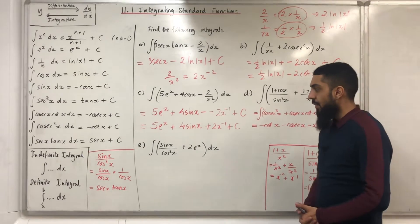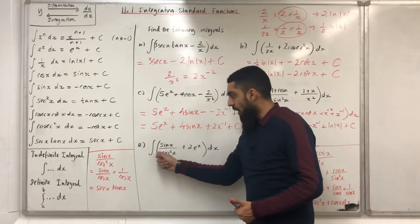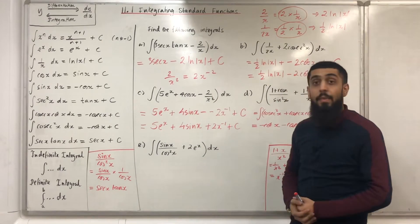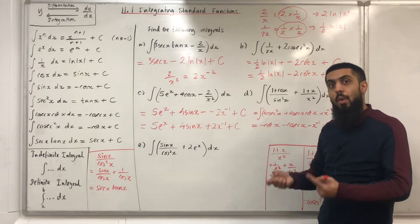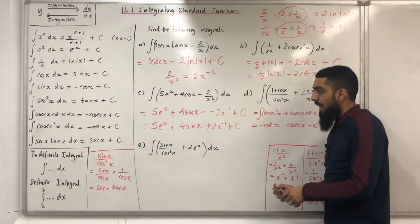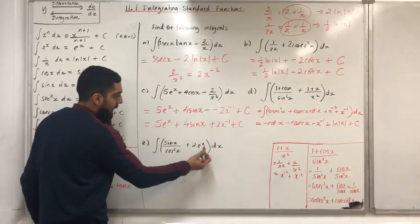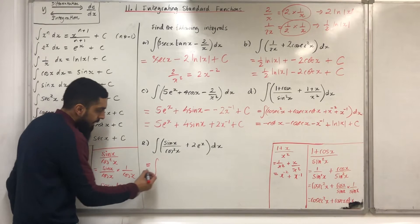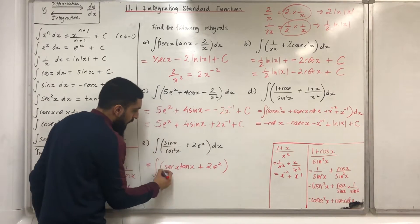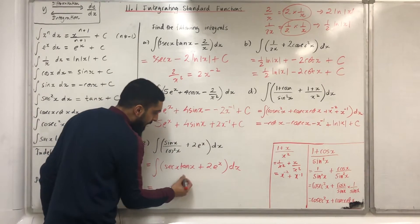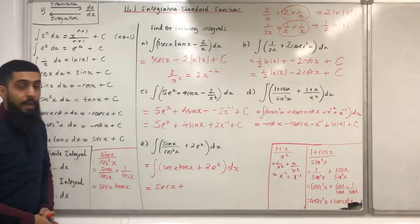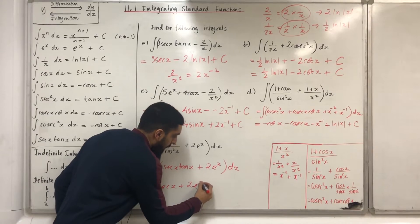Part e: integral of sin x/cos²x plus 2e^x dx. The first term cannot be integrated directly, so we rewrite: sin x/cos²x is the same as (sin x/cos x) multiplied by (1/cos x). Now sin x/cos x is tan x and 1/cos x is sec x, so this product is sec x tan x. Therefore the integral becomes the integral of sec x tan x plus 2e^x dx. The first term integrates to sec x, and 2e^x integrates to 2e^x, giving sec x plus 2e^x plus c.